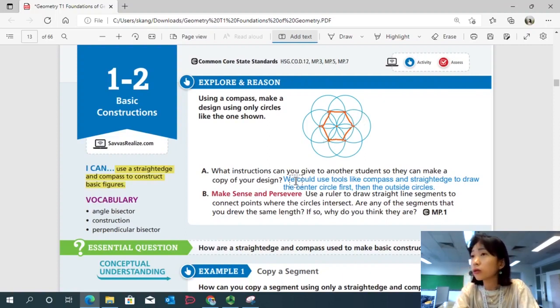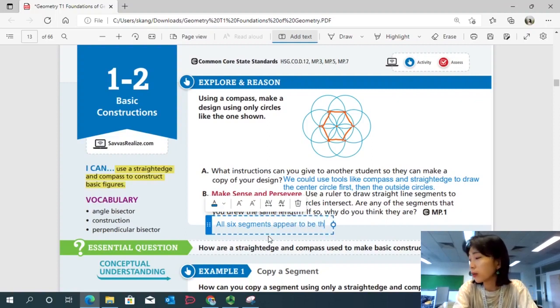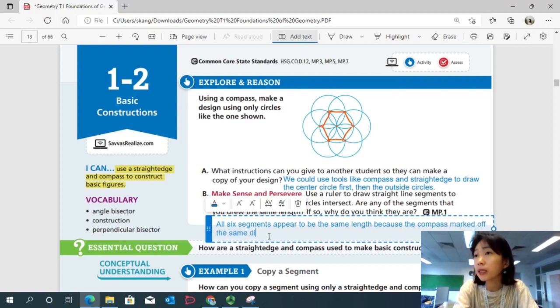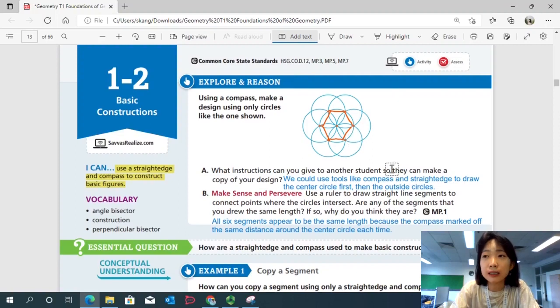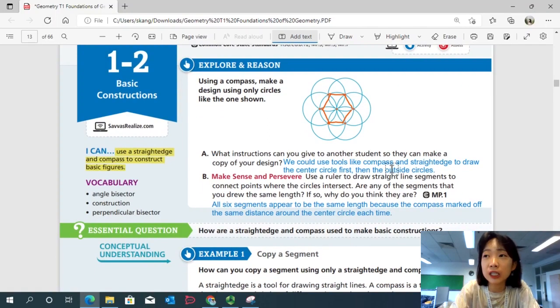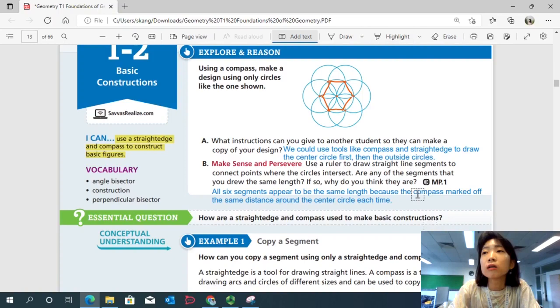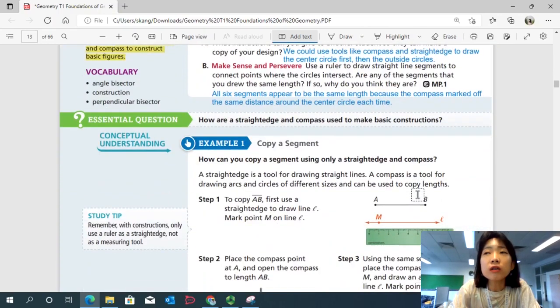So then let's write that down. All six segments, we could say that all six segments appear to be the same length, and because the compass marked off the same distance around the center circle each time. Okay, so throughout this lesson, we'll be thinking about how a straightedge and compass could be used to make basic constructions. Okay, so you will need a straightedge and a compass for this lesson.